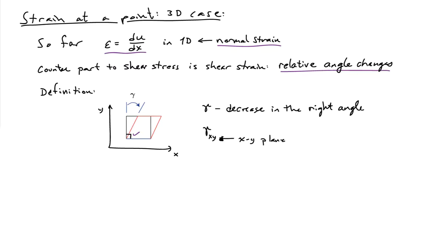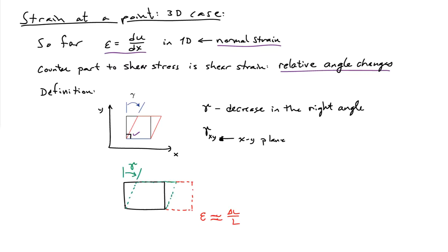The symbol for shear strain is gamma. In the 3D case, we'll be more specific and write gamma_xy to indicate shear strain or changes of angle in the xy plane — the change of angle between the x and y axes. So we have normal strain, delta L over L: we stretch an object in a given direction, compute the change of length, and divide by the original length. And for shear, we have the relative change of the 90-degree angle, called gamma, the shear strain.